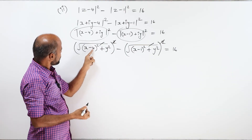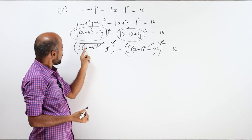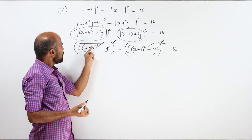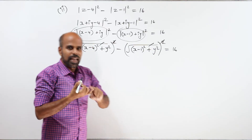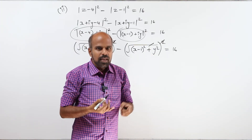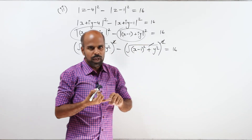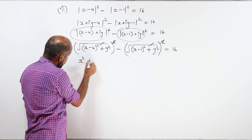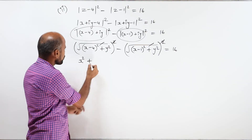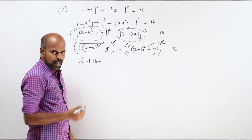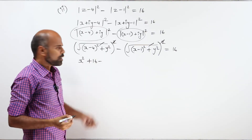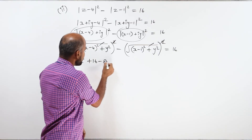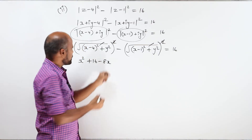Expanding x minus 4 whole square using a minus b whole square equals a squared plus b squared minus 2ab: a is x, b is 4. So x squared plus 16 minus 8x, plus y squared, minus the second bracket expansion.